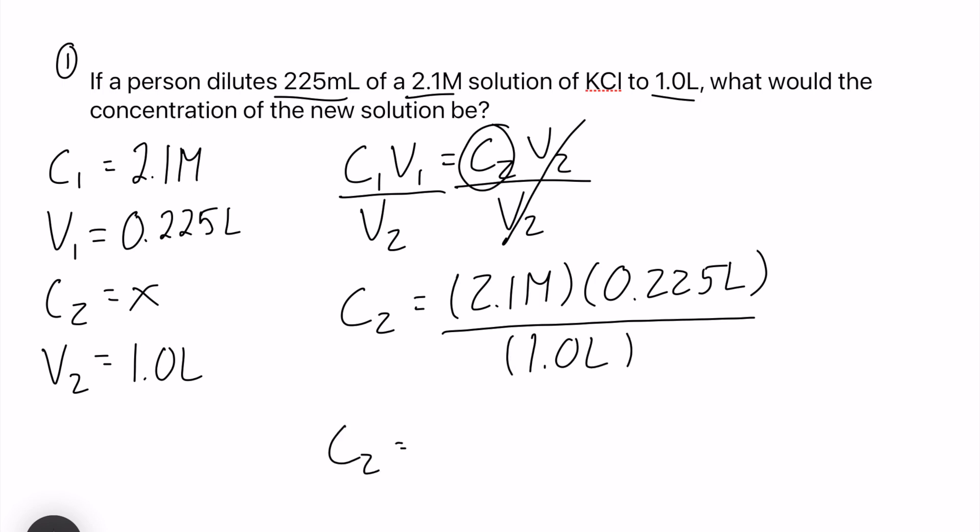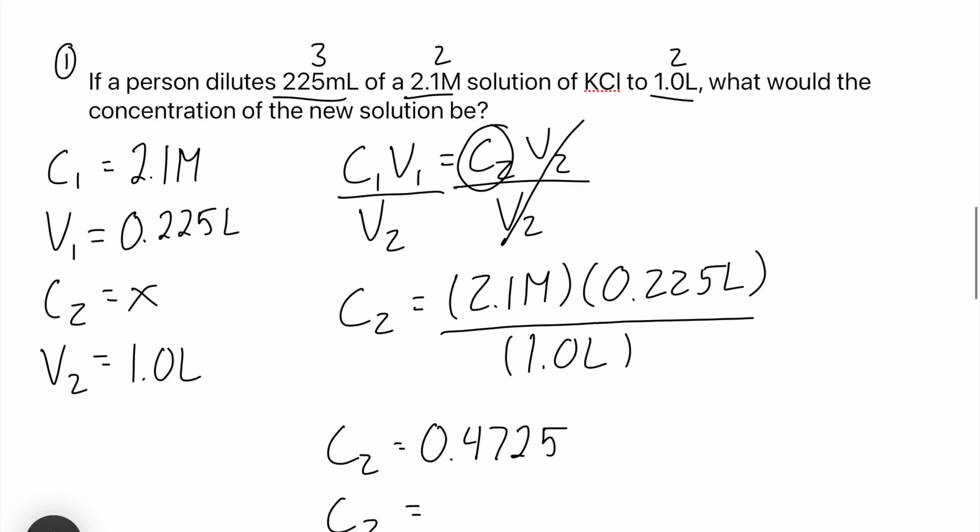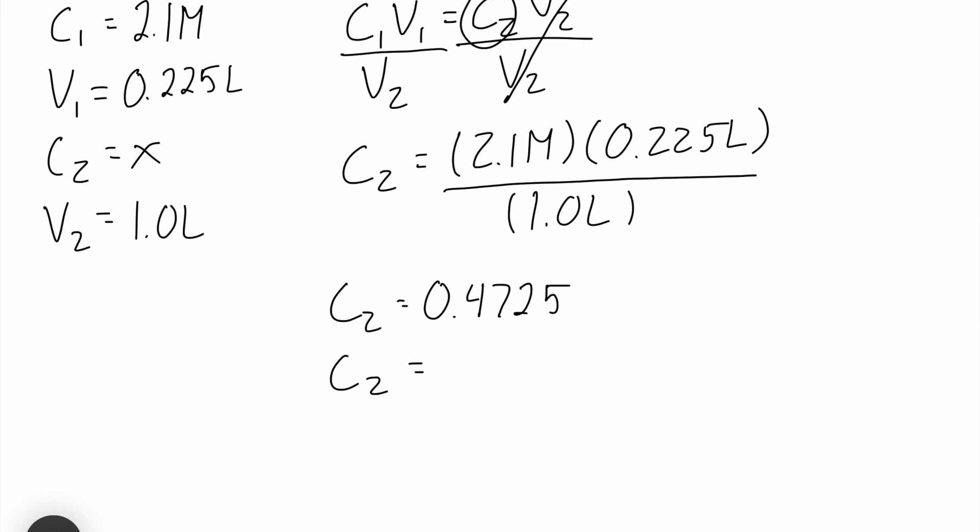Now if we type this into our calculator we will go 2.1 multiplied by 0.225 all over 1.0, and what you should get for a second concentration is 0.4725. We have to take a quick look at significant figures. We have 3, 2 and 2, therefore we should keep two significant figures. Let's go ahead and round our answer to 2. So we should get 0.47 molar.